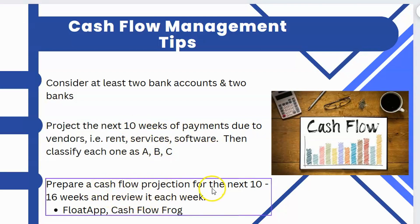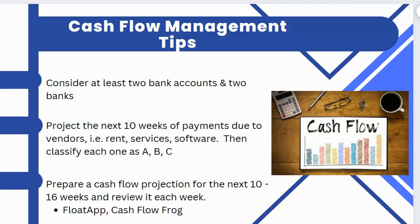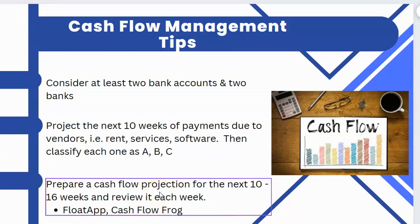Another tip is the cash flow projection — we like to look at at least 13 to 16 weeks. You can do this in Excel or Google Sheets, but there are also apps out there: Float App, Cashflow Frog, and one called Cashflow Tool. These apps connect to QuickBooks Online or Xero and make the projection process a lot easier — you're not starting from scratch because they pull in actual activity, and then you can build off of that.